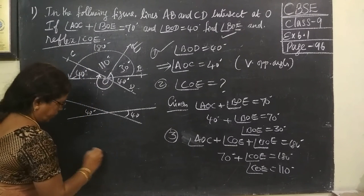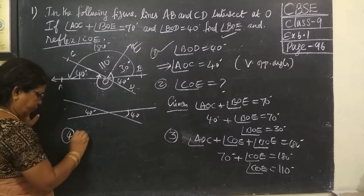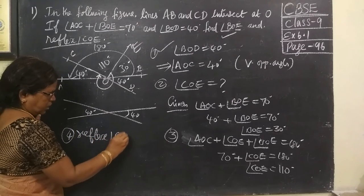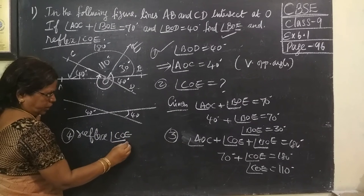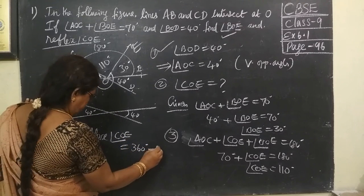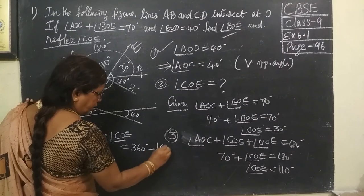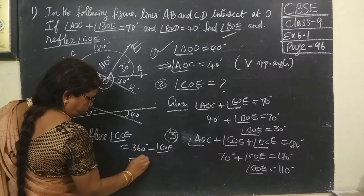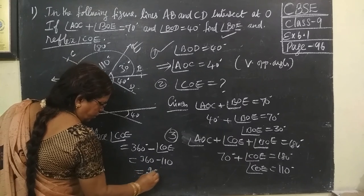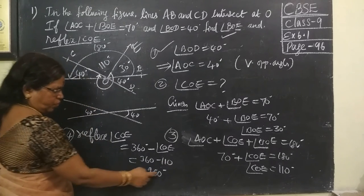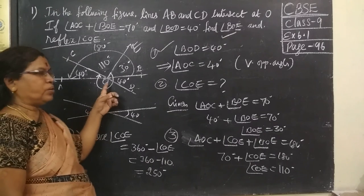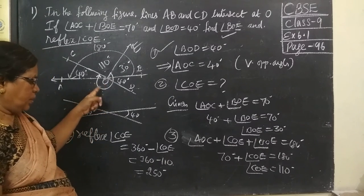You want to write reflex of this one. So, fourth point, reflex of what? Reflex of angle COE equal to 360 minus, yeah, angle COE. So, 360 minus 110 equal to 250 degrees. So, 250 plus 110, 360 degrees. So, whenever you want to find reflex of angle, you have to subtract from 360 degrees.